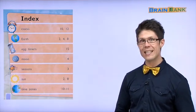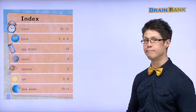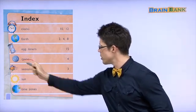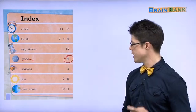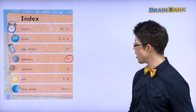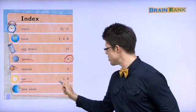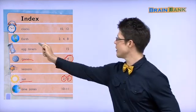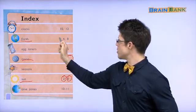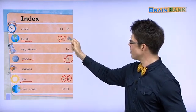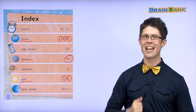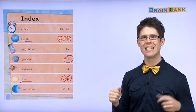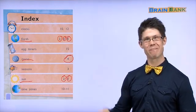Here is the index page. Do you remember? If you want to see a picture of the moon, go to page four. If you want to see a picture of the sun, go to page two or eight. And if you want to see the earth, you can go to page two, four, or eight. That is everything for the book, How Many Days in a Year? I hope you enjoyed it, and see you next time. Bye-bye.